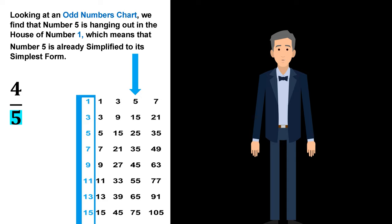Looking at an odd numbers chart, we find that number 5 is hanging out in the house of number 1, which means that number 5 is already simplified to its simplest form.